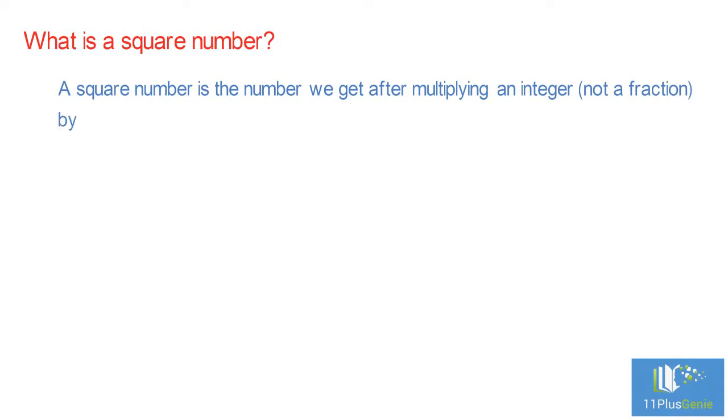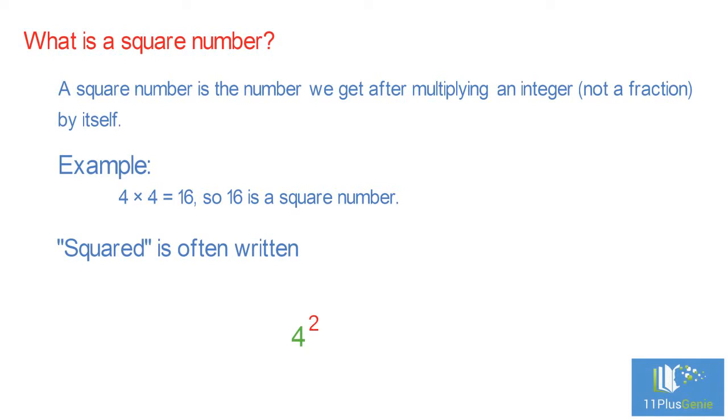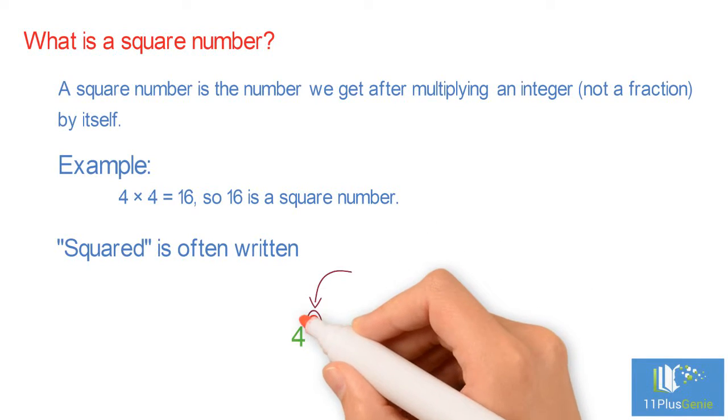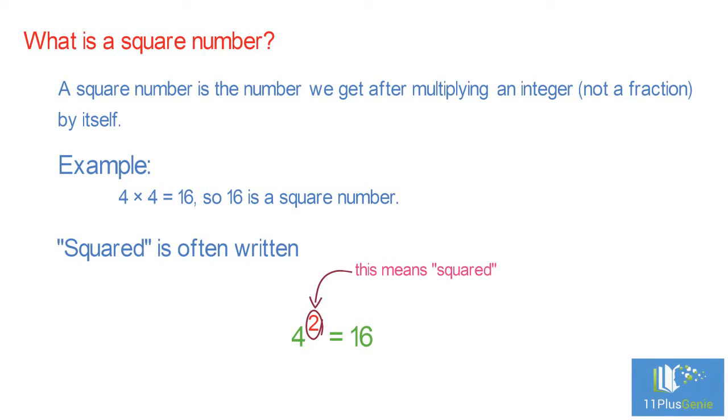What is a square number? A square number is the number we get after multiplying an integer, not a fraction, by itself. For example, 4 times 4 equals 16, so 16 is a square number. Square is often written, this says 4 squared equals 16. The little 2 says the number appears twice in multiplying.